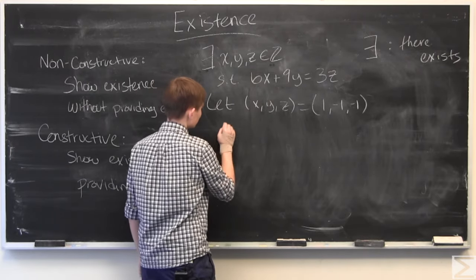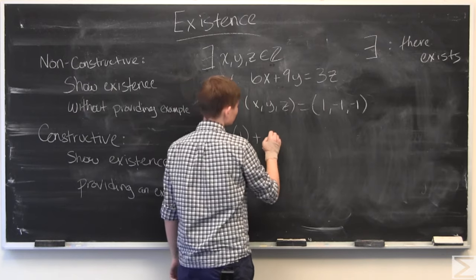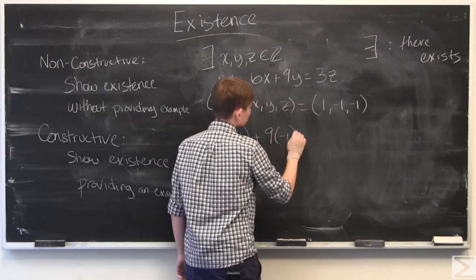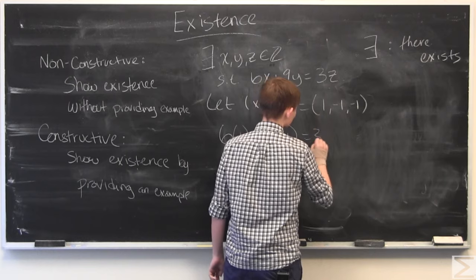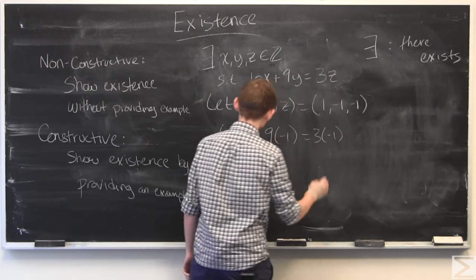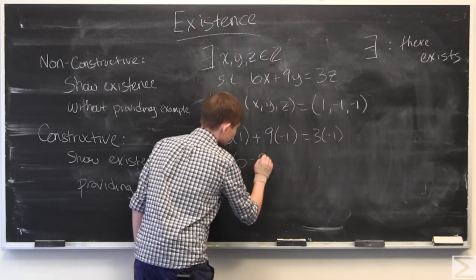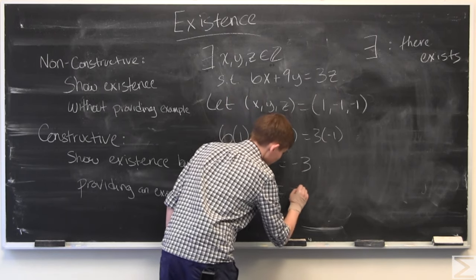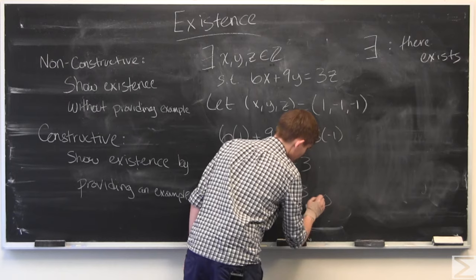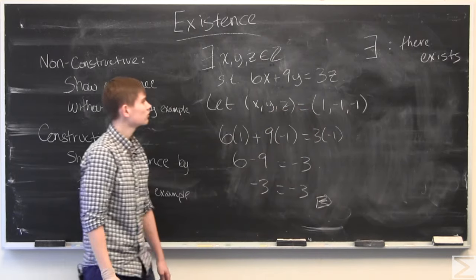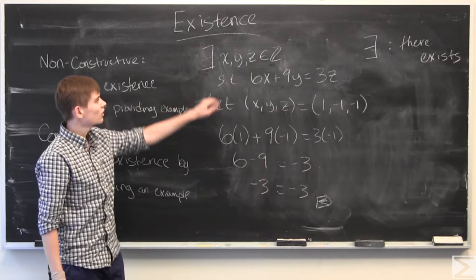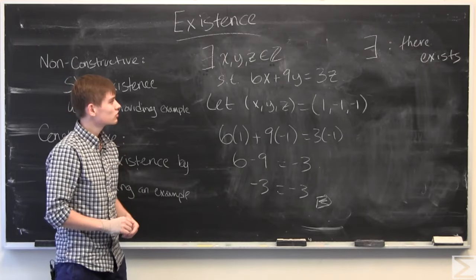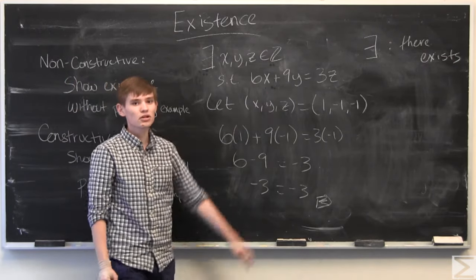Then we look here, we have 6 times 1 plus 9 times negative 1 equals 3 times negative 1. 6 minus 9 equals negative 3, negative 3 equals negative 3. And there we go. We've shown that there exists x, y, and z that are integers such that this equality holds.